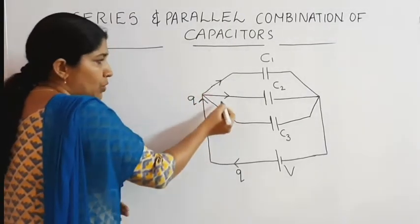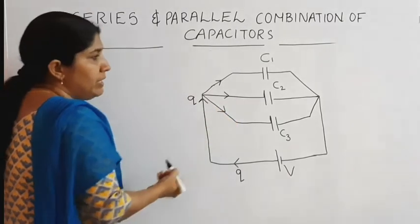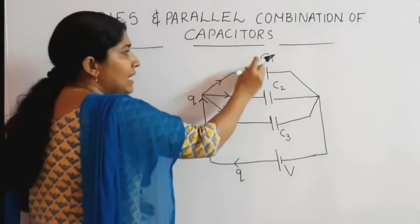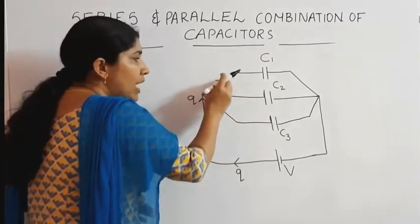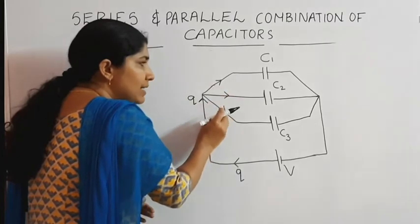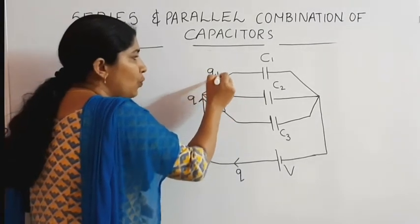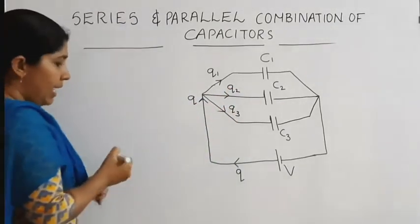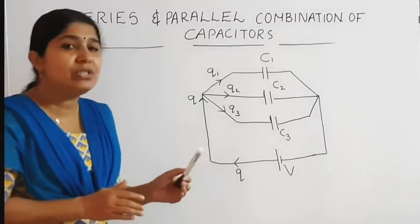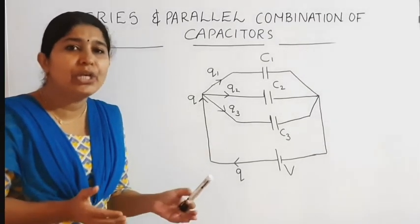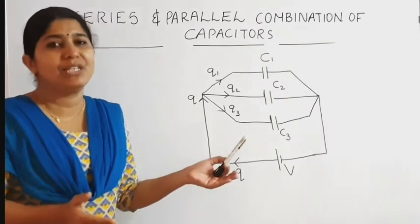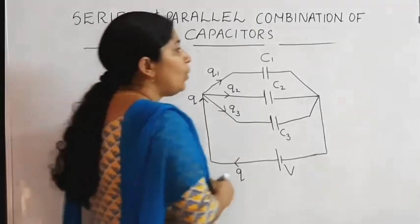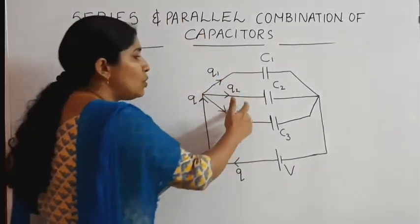The value of charge flowing through each branch is based on the capacitance of the capacitor. So the charge through each branch can be taken as Q1, Q2 and Q3. In parallel combination, charge flowing through each branch varies according to the capacitance of the capacitor.